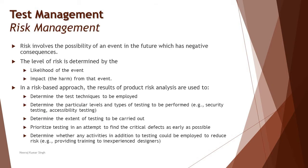To get started, the first thing is to define the word 'risk.' Risk is given different definitions, but a generic definition is that it is an uncertainty which may or may not happen. It's not necessary that a risk will always happen. For example, if you plan to go shopping today and anticipate it might rain and ruin your plan — that is just a risk. It may or may not get executed.